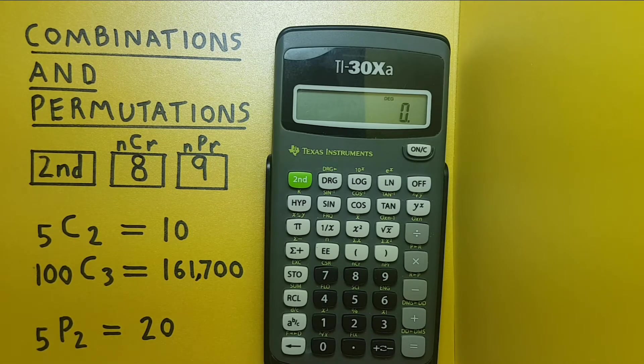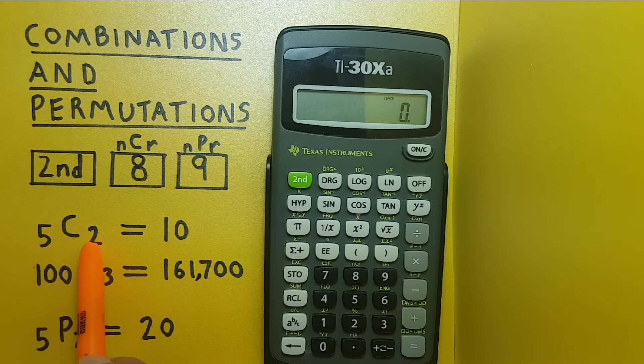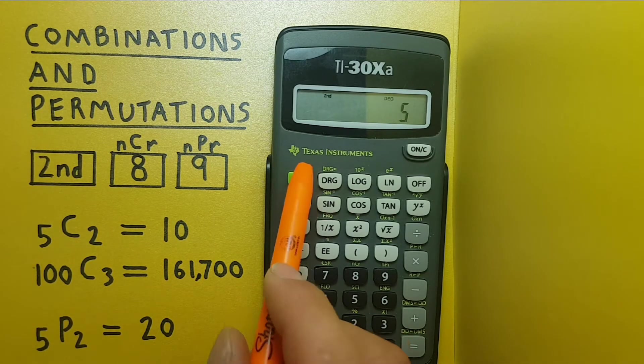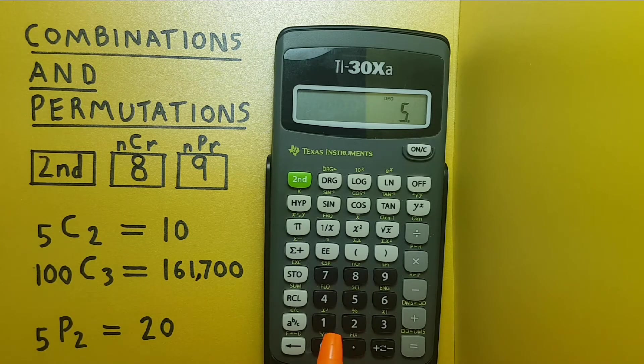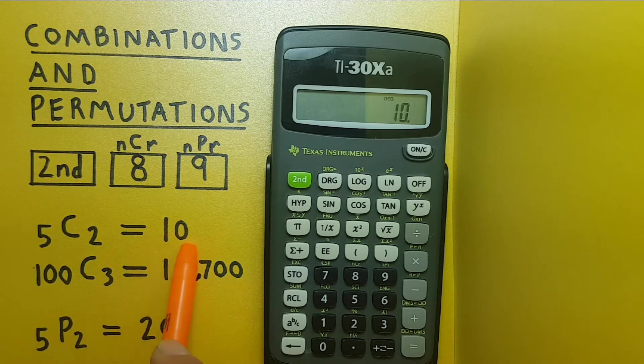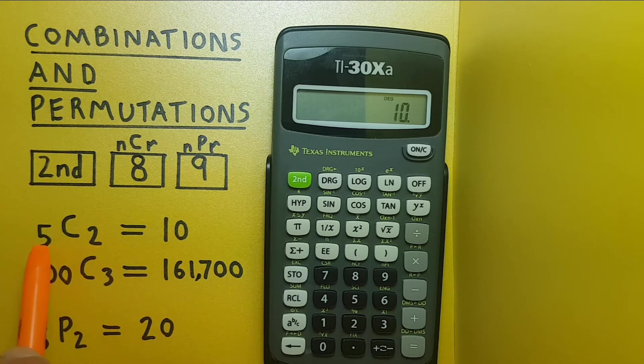Let's try this out. If we have five and wish to choose two, we enter it like this. Five, second function eight, two, and then press equals and we see there are ten possible ways to choose two from five if the order does not make a difference.